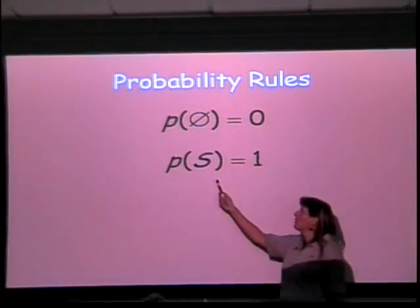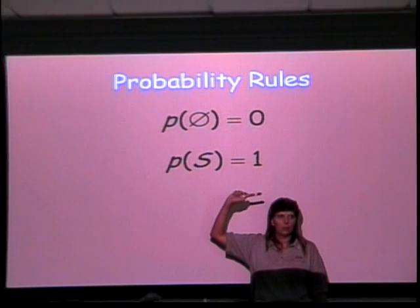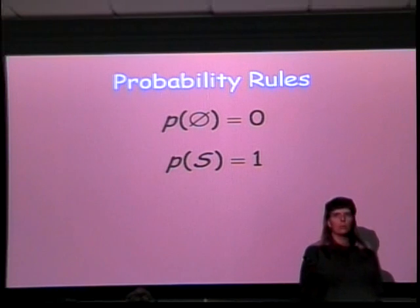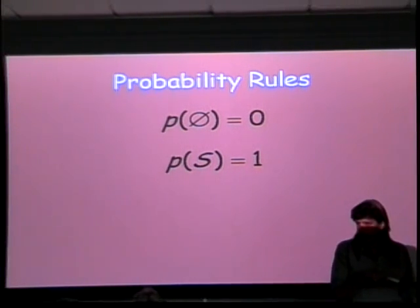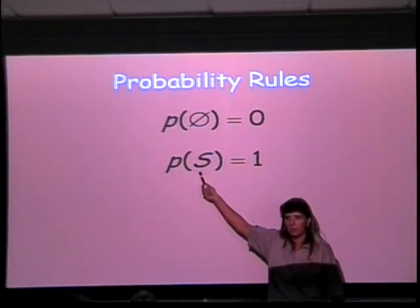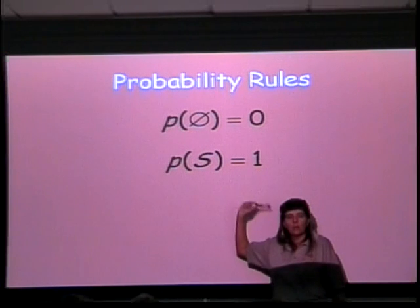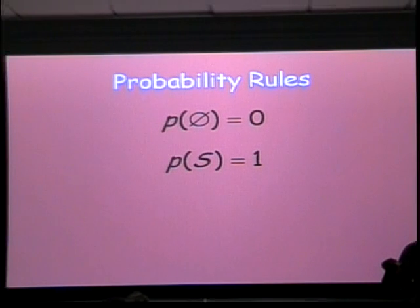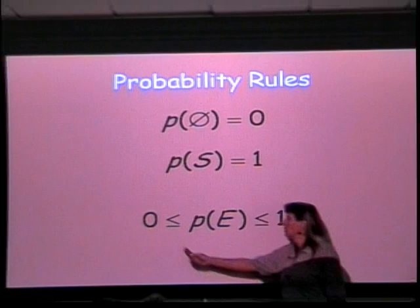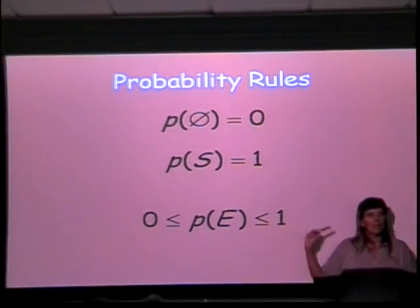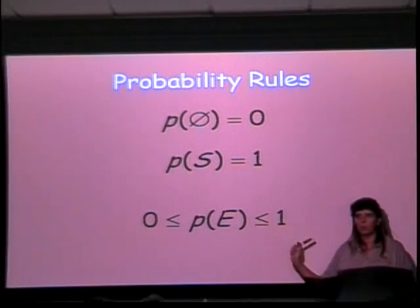This says the probability of our sample space, that means everything in there that can happen, is equal to one. That should make sense because remember when we count probabilities, we count the number of things in the set we're talking about, divided by the number of things in the sample space. And if we're talking about the sample space as our set, divided by the sample space, everything's in there. So its probability is going to be one. That's our highest possible probability. All other probabilities have to fall between zero and one. So this is the probability of just any old event. It's going to have a probability somewhere between zero and one.